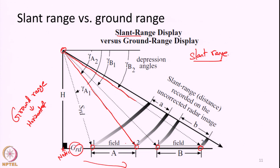Because of this slant range image acquisition, we will see that objects in the near range will be compressed compared to objects in the far range. For example, if we have 2 features A and B both with the same linear dimensions, but A is in near range and B is in far range, A will appear compressed in the radar image in comparison with B. We may think A is a smaller field when we compare it with field B. But if we convert the slant range to ground range and calculate the true horizontal distance of each field, we will realize both fields have the same linear dimensions. This is a major difference between how normal photographs are taken and how radar imaging works.